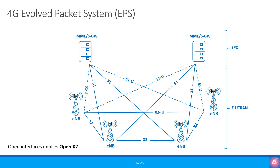It should be pointed out that in a 4G system, open interfaces implies an open X2 interface. Many publications and articles don't mention this. Without an open X2 fully compliant with 3GPP, there is no Open RAN. The ORAN Alliance Workgroup 5 is working on fully open and interoperable interfaces, including X2.